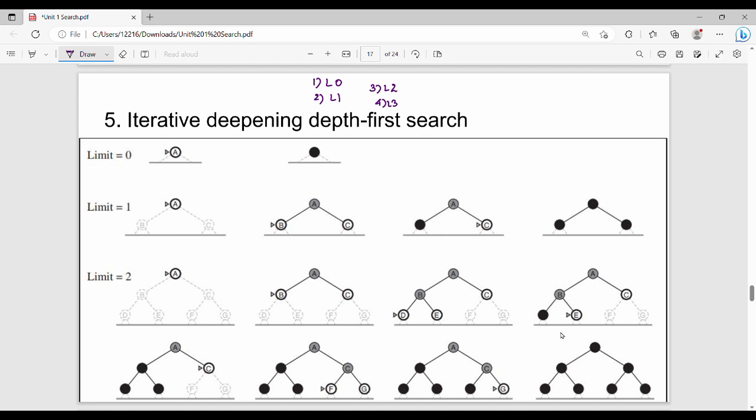If you find the result in this point, you can stop. Let's see an example. If the limit is 0, then you can search the A node. So A node is not a target. A node is not a target. You can search the goal state G. Then the next limit is to increase limit value, so limit 1.